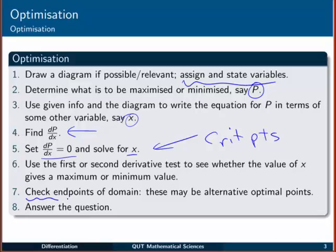When you're doing applied problems, you also need to check the endpoints of the domain, so the maximum and minimum x values you're allowed to use, because these can sometimes be alternative optimal points. Once you've got all that information, have a look back at the question, see what it actually asked you. Did it ask you for the x values, the P values, or both? Did it ask you for a maximum or a minimum? Pick this out and answer the question appropriately.